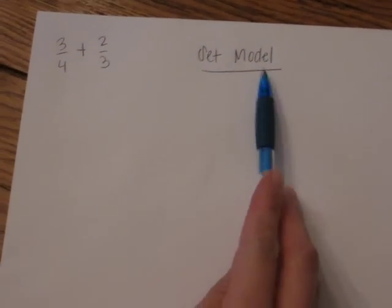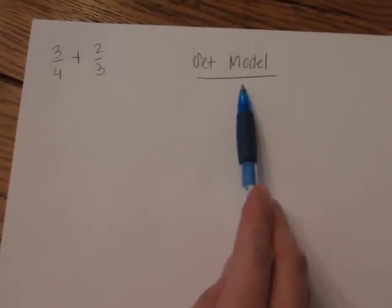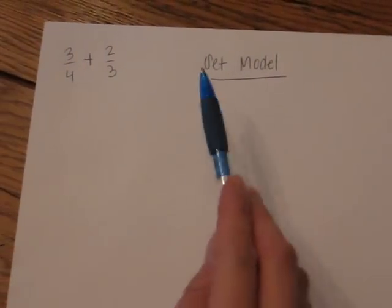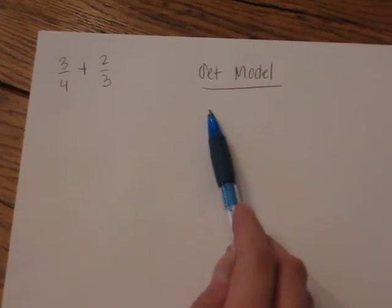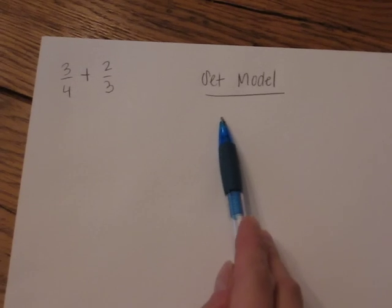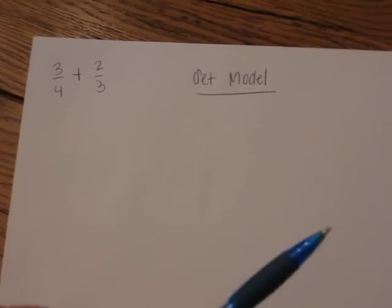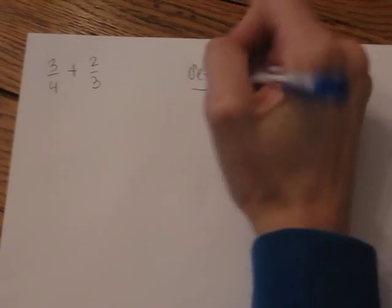Okay, what we're going to use in this one is a set model. Set models are tangible objects such as two-color counters, unifix cubes, snap cubes, anything that would be tangible in terms of students being able to pick it up. This would be a concrete model.